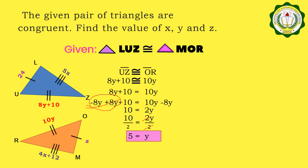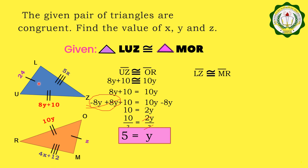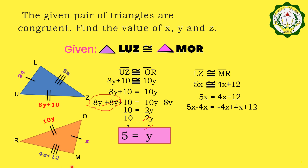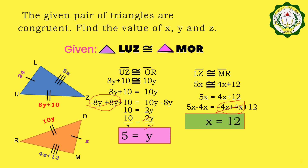Now let us solve for the value of X. Segment LZ is congruent to segment MR. Segment LZ is equal to 5X and segment MR is equal to 4X plus 12. By substitution, we have 5X is equal to 4X plus 12. Adding negative 4X to both sides, we have 5X minus 4X is equal to 4X plus 12 minus 4X. The 4X terms cancel out, giving us X is equal to 12.